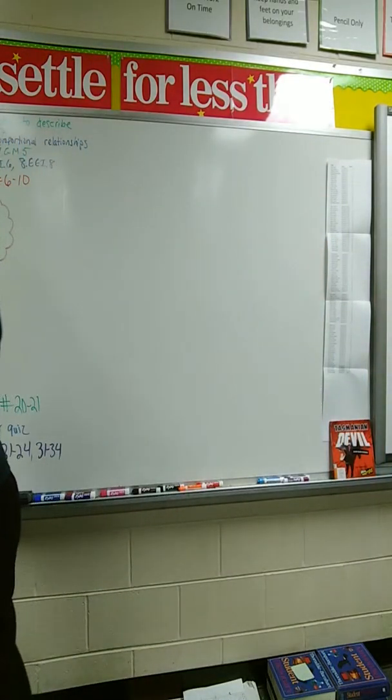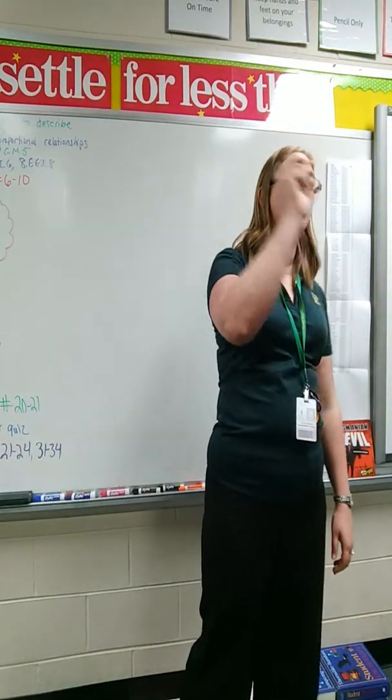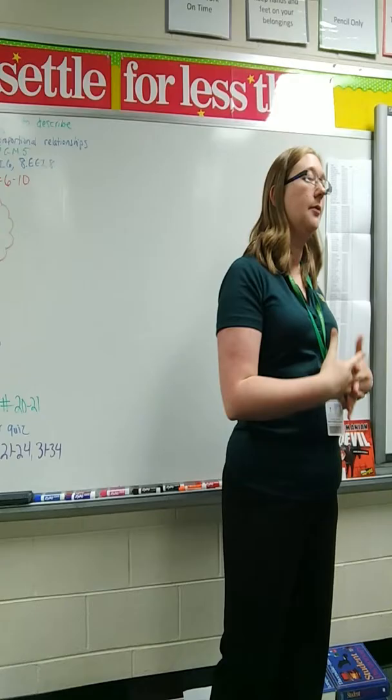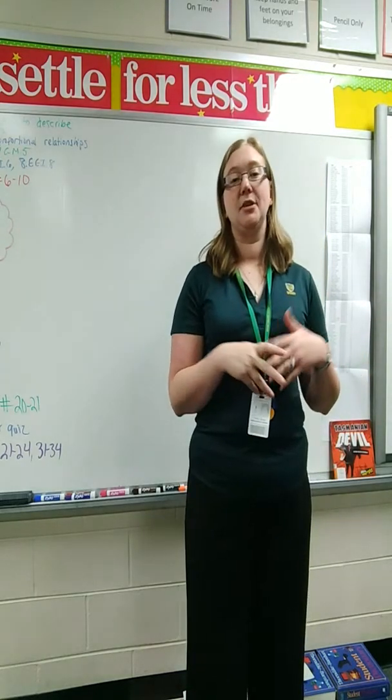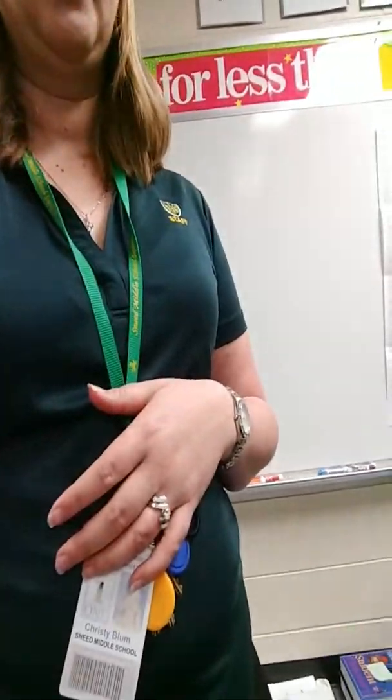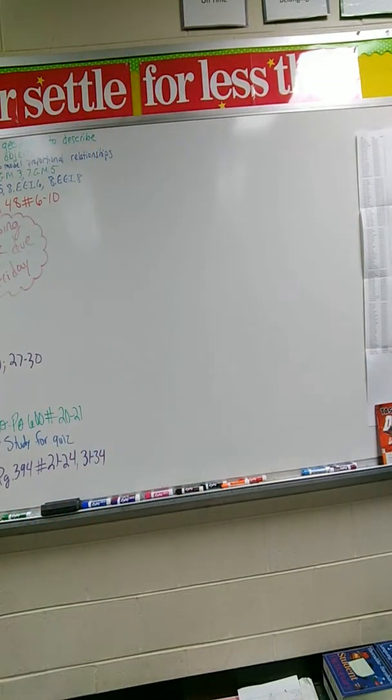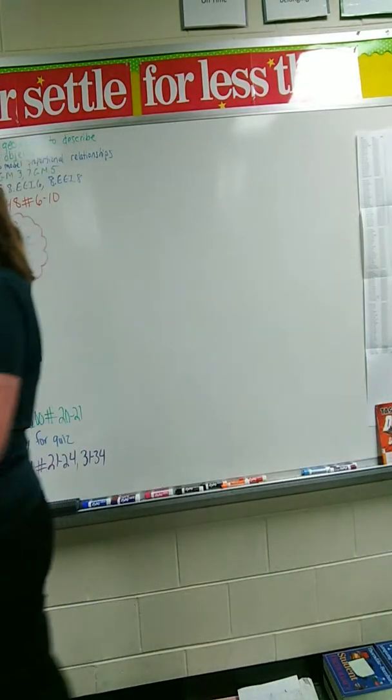Option 2, we can use an equation. So that what-did-we-do column, that is our equation, that is our function, that's what we are doing. So we can represent it that way. The third way that we can do this is by graphing. Raise your hand if you think that you're pretty good at graphing. Okay, you're okay? All right. So those are our options, and we're going to look at all three of those today.